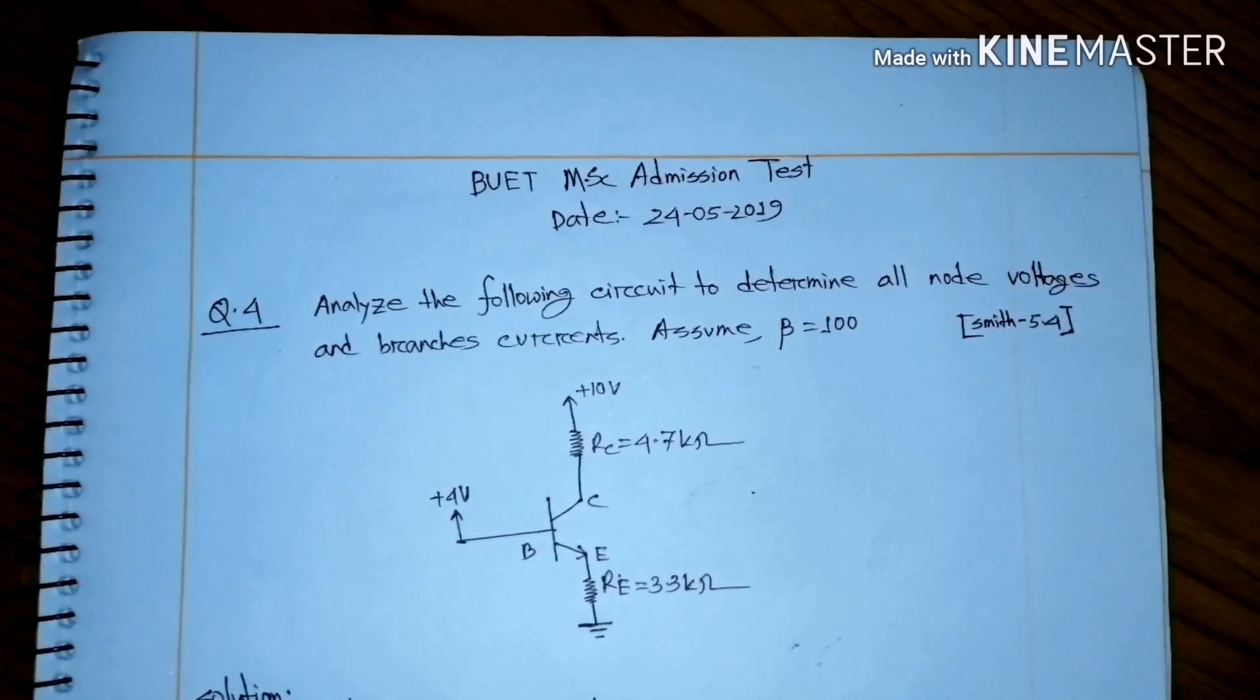Hello everyone, I'm going to talk about the BUET MSc admission test 2019, Question 4. Analyze the following circuit to determine all node voltages and branch currents. Assume beta equals 100.